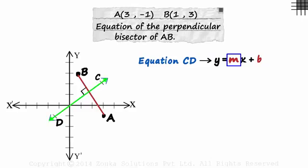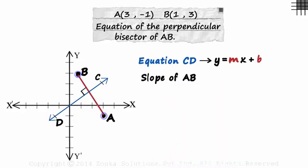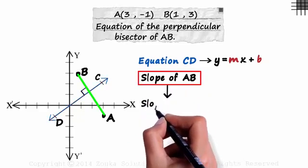M is the slope of CD, and B is its Y-intercept. How can we find the slope of CD? To find the slope of any line, we need the coordinates of at least two of its points. We have the coordinates of A and B, which can give us the slope of AB. And as AB and CD are perpendicular, the slope of AB will give us the slope of CD.